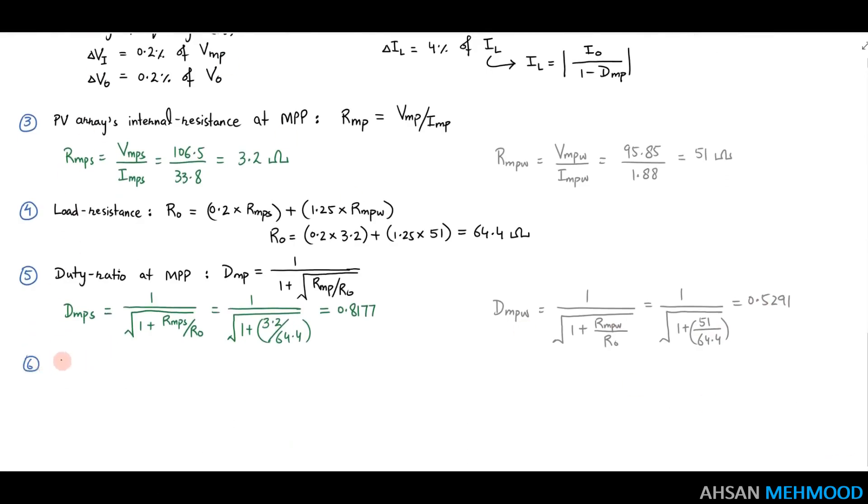Calculate load voltage and current values at MPP in the sixth step. V node stands for load voltage and is calculated by using this equation. The load current is indicated by I node and is calculated by dividing V node by R node.